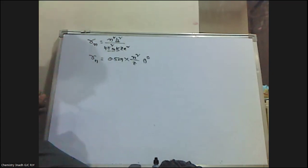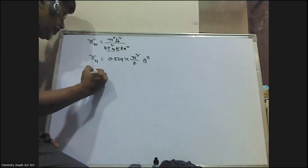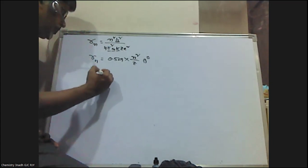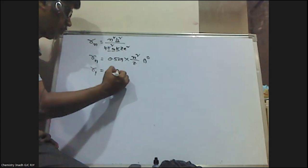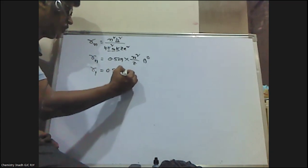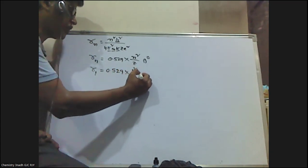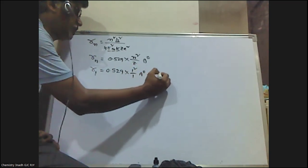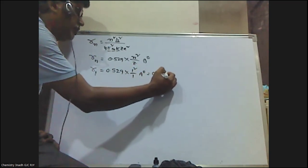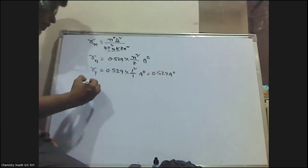Now, the question gives that the radius of the first orbit, r1, has n = 1. For the hydrogen atom, z = 1. So substituting: r1 = 0.529 × (1²/1) = 0.529 angstrom units.